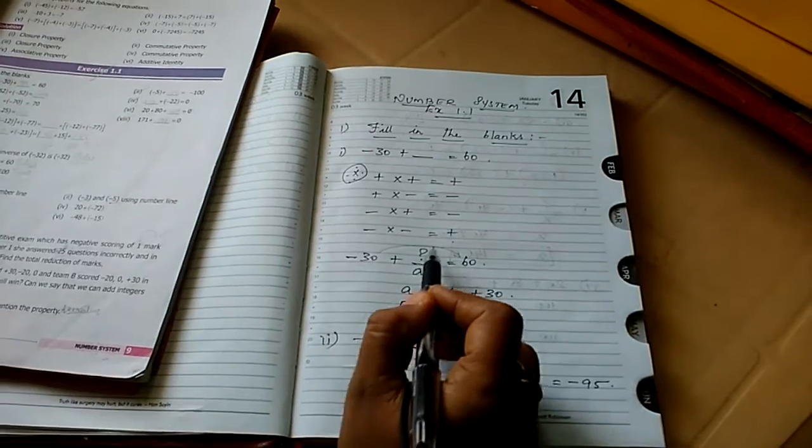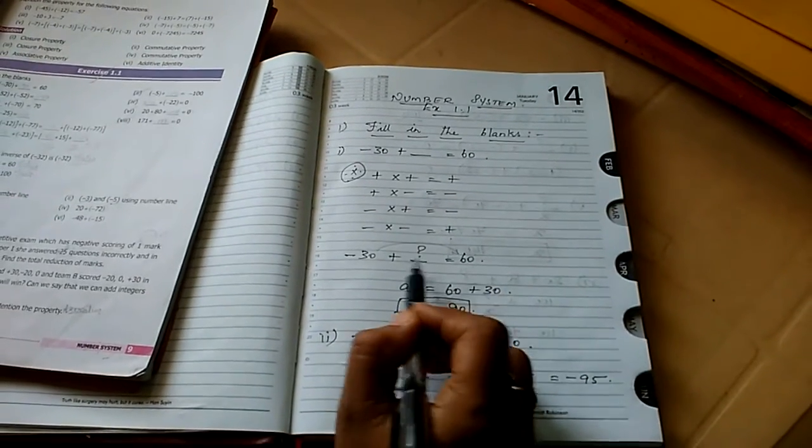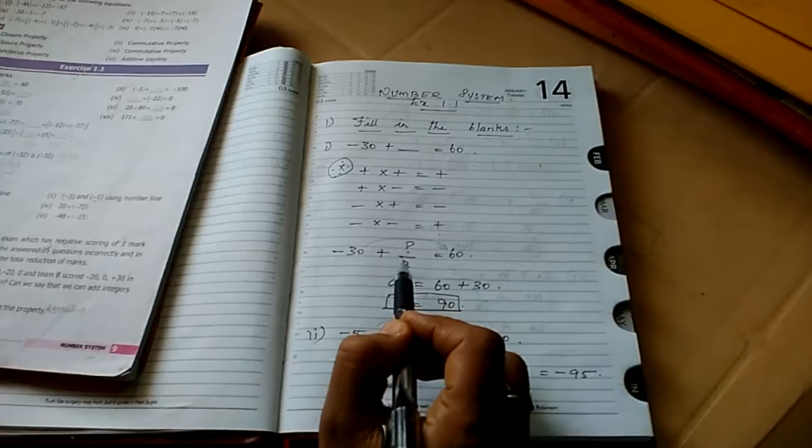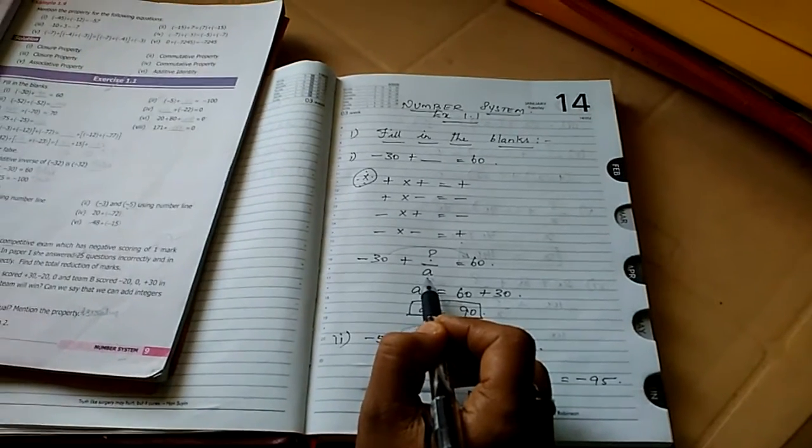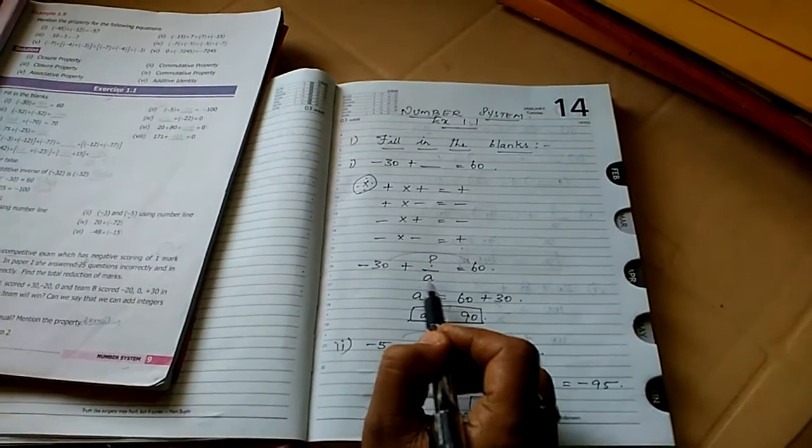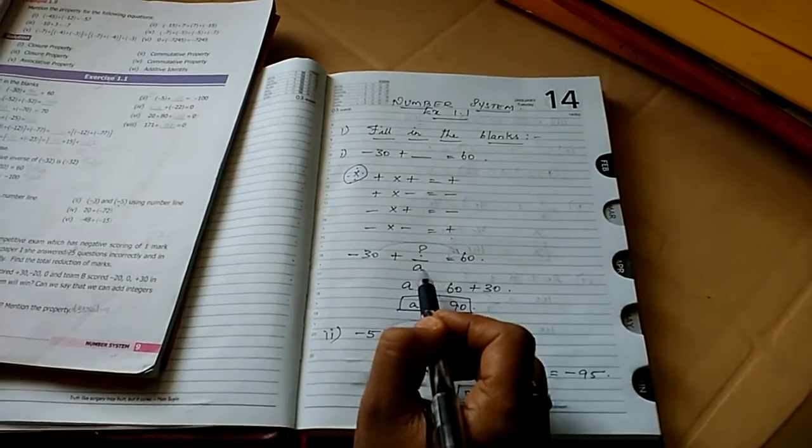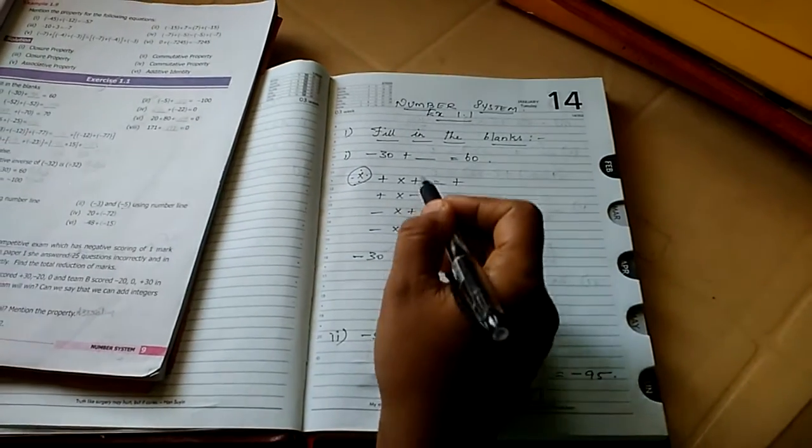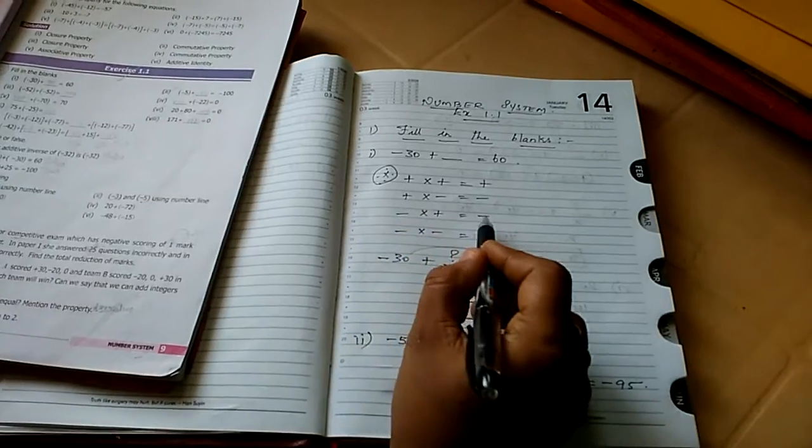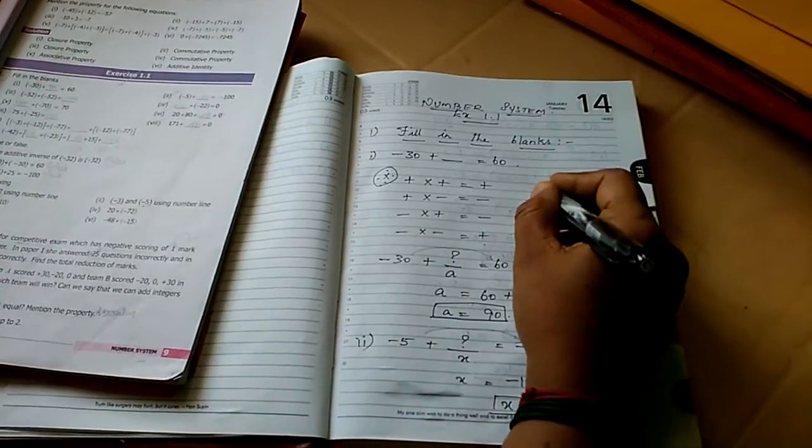So let us see the solution. Minus 30 plus which is for question mark equal to 60. Instead of the question mark, I have taken it here as the letter by A. So you don't have to take only as letter A. Any letter from A to Z you can take.